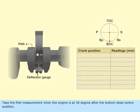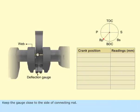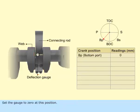Take the first measurement when the engine is at 30 degrees after the bottom dead center position. Keep the gauge close to the side of connecting rod. Set the gauge to zero at this position.